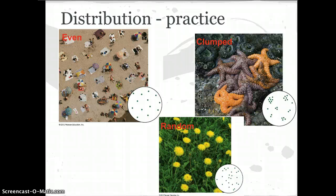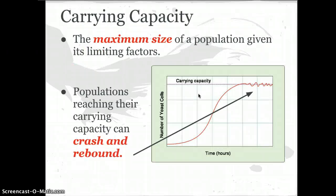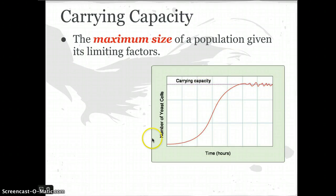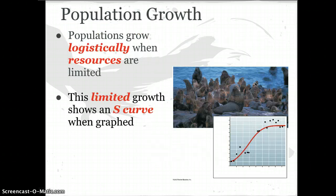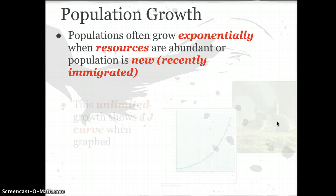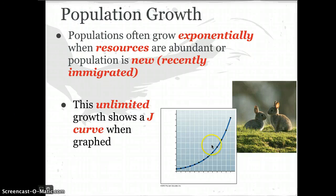Keep these things in mind as you go forward and complete your limiting factors webquest. You've seen different forms of distribution, carrying capacity with its crash-and-rebound pattern, and two types of growth: logistic growth with limited resources producing an S curve, and exponential growth — which many populations show at least initially — producing a J curve. Go ahead and get started on the limiting factors webquest; you can access this PowerPoint on the website if you need help completing it.